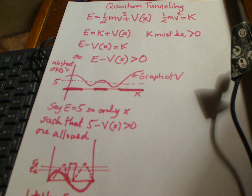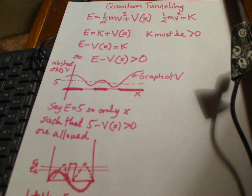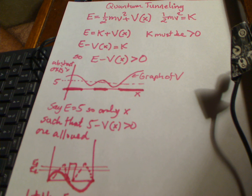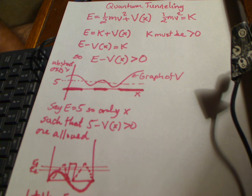I will now explain a little bit about quantum tunneling. In classical mechanics, the system has energy conserved, and the energy expression is one-half mv squared plus V of x, where V is a potential function. Its derivative, or gradient, gives you the force on the particle at position x. So when the particle is at position x, taking the derivative of V of x gives you the force there.